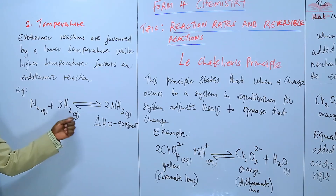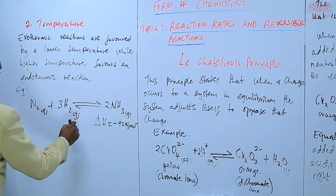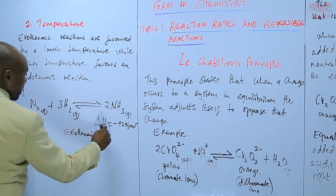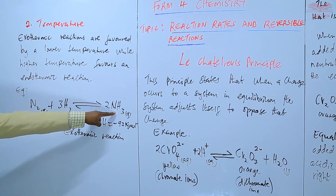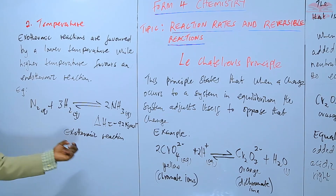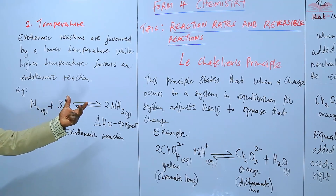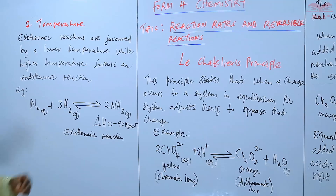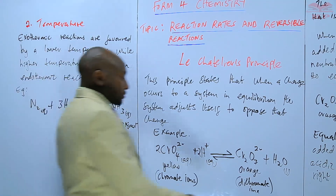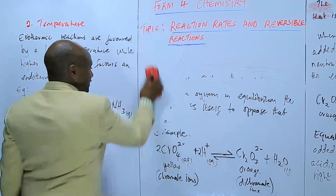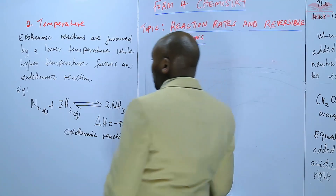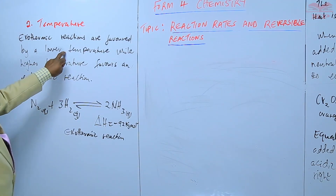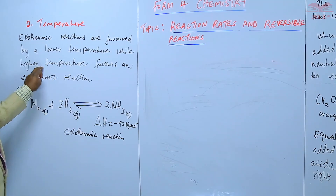Since this is an exothermic reaction, it will be favored by a lower temperature. If you want to get more yield of ammonia, we need a lower temperature. But if we provide a higher temperature, then we'll favor the backward reaction and get less ammonia. This is an exothermic reaction and therefore it will be favored by a lower temperature. If it were an endothermic reaction, it would be favored by a higher temperature.